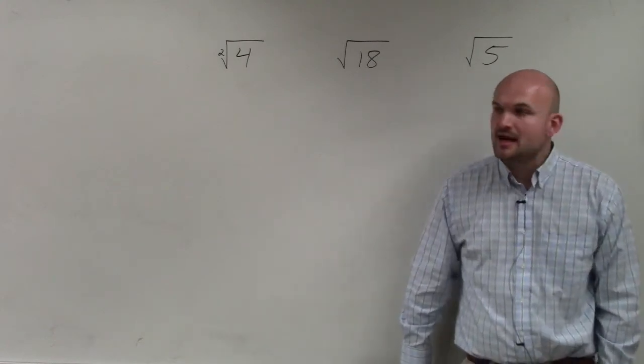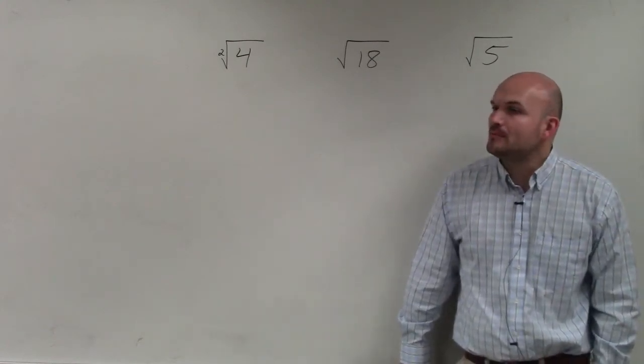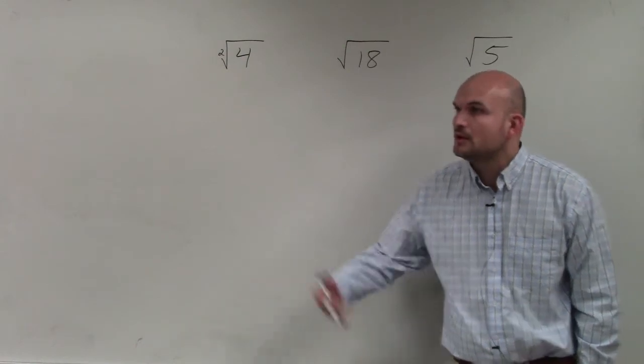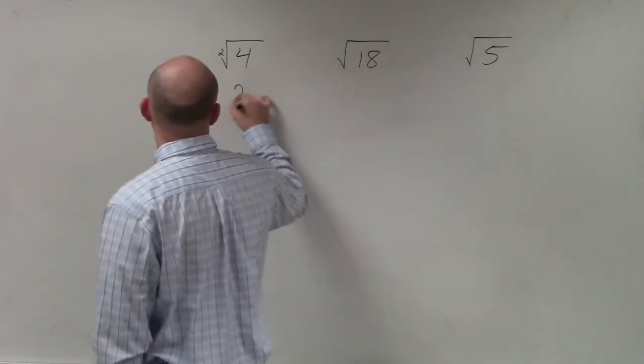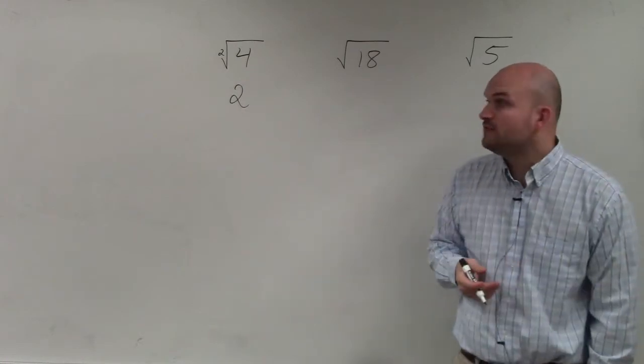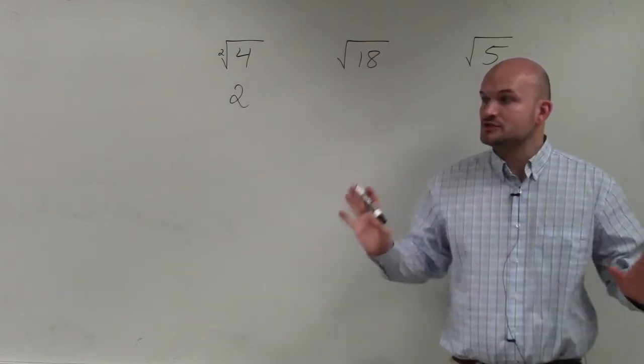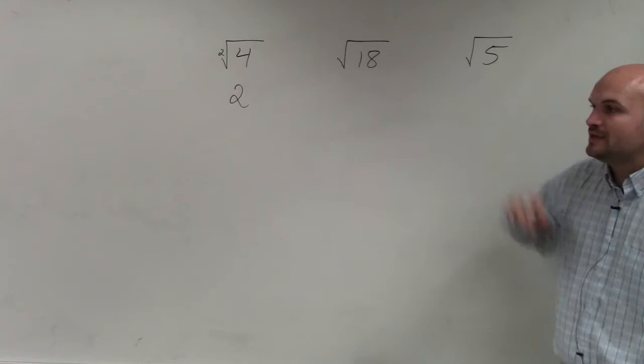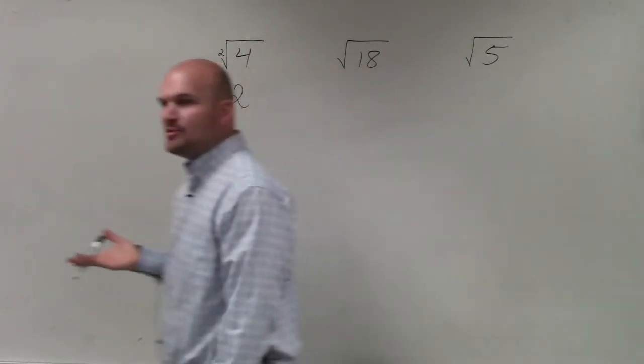What this is basically saying is what number multiplied by itself gives us 4, which hopefully you know is 2 times 2 equals 4. So the square root of 4 is just 2. However, when we look at √18, there is not a number that multiplies by itself to give us 18.